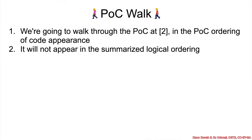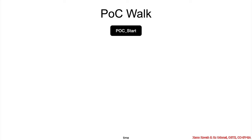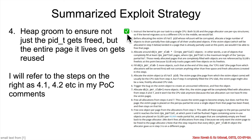We are going to do a walkthrough of the actual proof-of-concept exploit. Things will not necessarily appear in the logical ordering of 1 through 7 — that's okay. Step 4.1 comes first: instruct the kernel to pin our task to a single CPU. If the process moved around between CPUs, because heap information is per-CPU, that would make all the heap grooming pointless. So the first step is to pin the process to CPU 0.